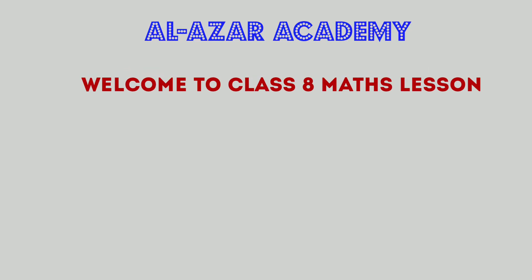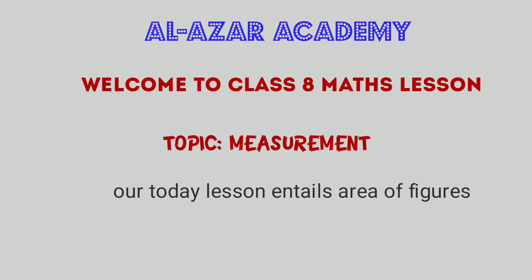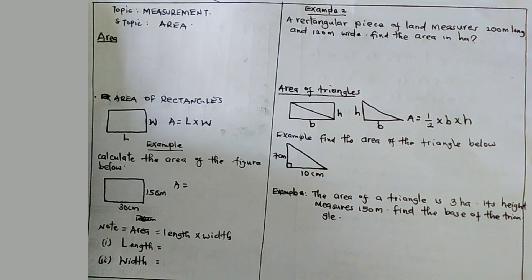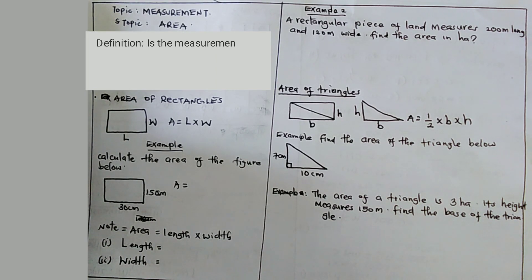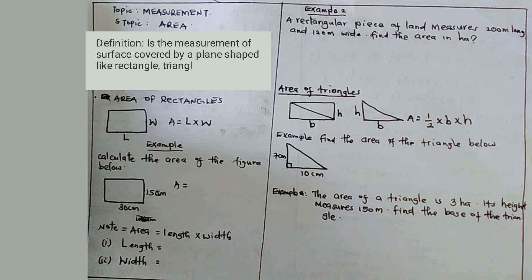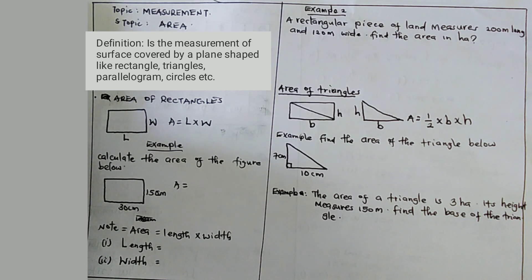Welcome all of you to mathematics lesson standard 8. My name is Mr. Hashim. Our topic today is measurement. Under measurement we are going to talk about area. First of all we are going to define what area is. Area is the measurement of the surface covered by a plane shape like a rectangle, triangle, parallelogram, and so on. Area is measured in square units, for example centimeter square and meter square.